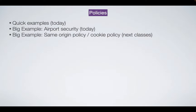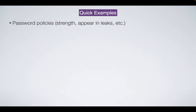I'll give a couple of quick examples and then we'll go through a longer example on airport security. In the next two classes we'll cover cookie policies and then the same origin policy, one lecture each. A common example of a policy is a password policy: rules about what password you can use when registering or resetting — things like requiring at least eight or ten characters, a capital letter, a small letter, a number, and a special character.